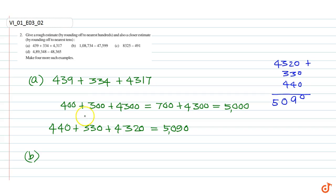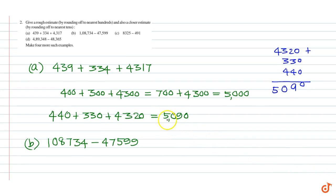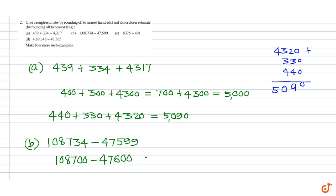Part B: 108734 minus 47599. By rounding off to nearest hundred we get 108700 minus 47600.